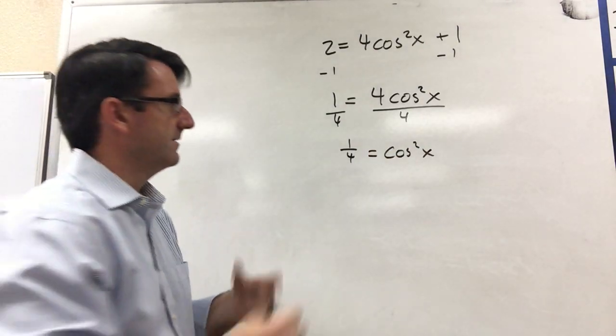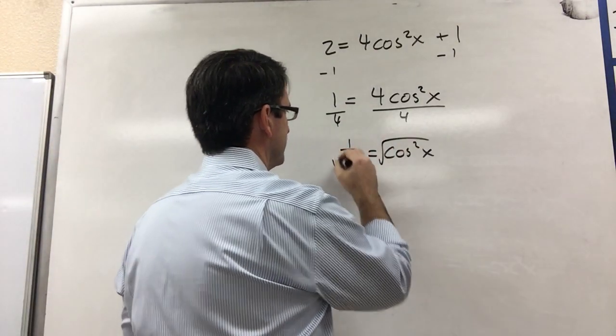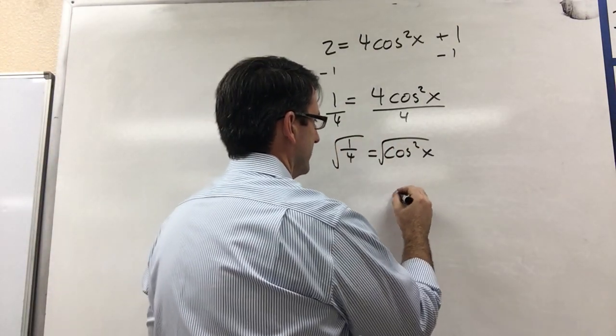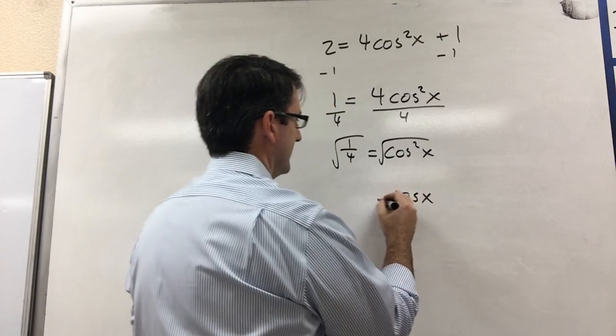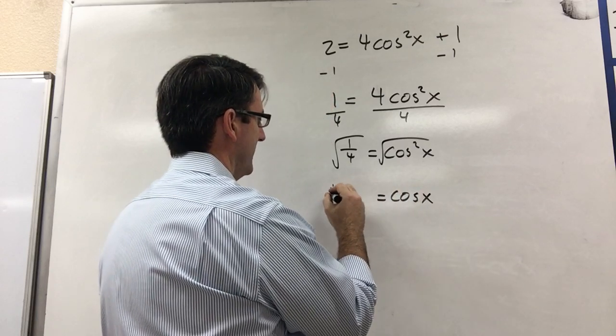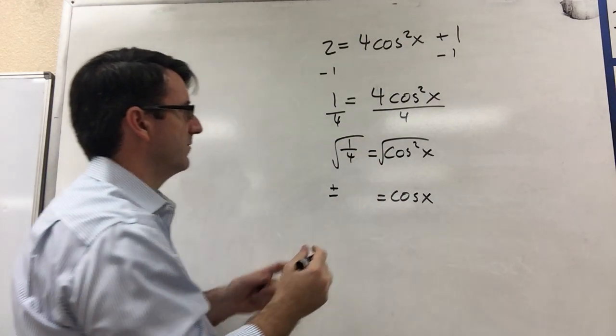Now to get cosine by itself, let's take the square root of both sides. So we get cosine of x is equal to plus or minus the square root of 1 fourth.